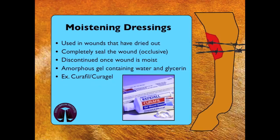The next category of dressings serves to moisten a wound that has become dried out. These dressings completely seal the wound and are therefore termed occlusive. Once the wound is sufficiently moist, these type of bandages should be discontinued. An example of a moistening dressing is CuraFIL or CuraGel, which is an amorphous gel containing water and glycerin.